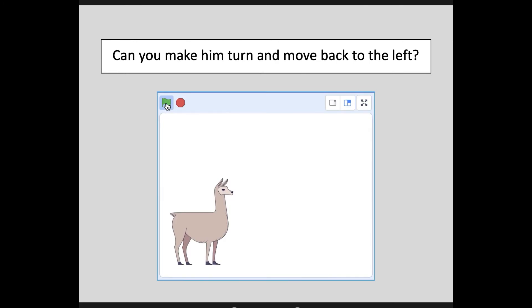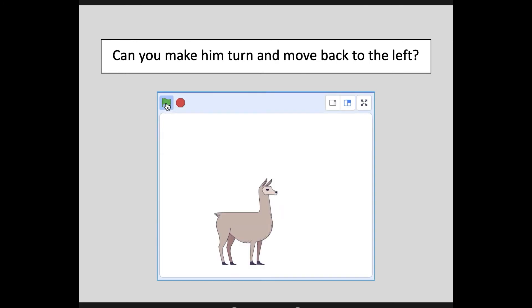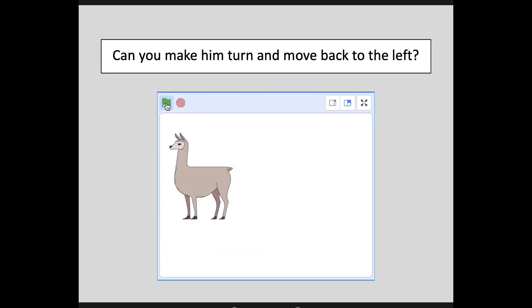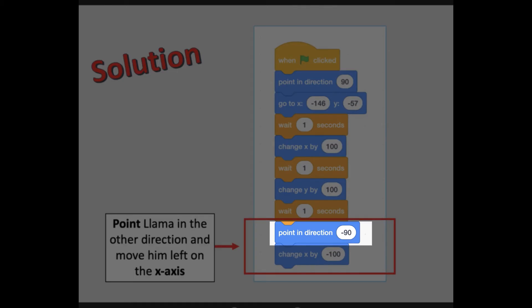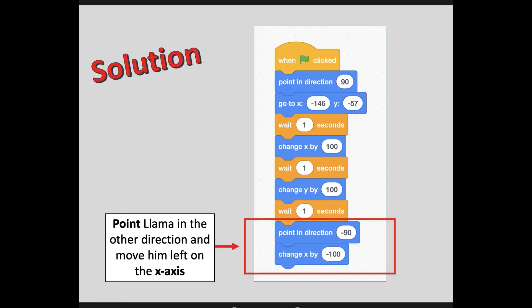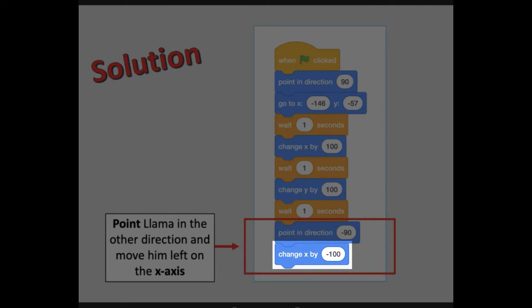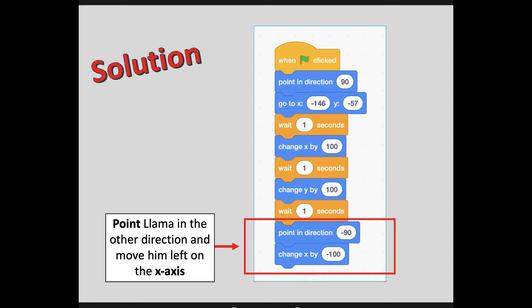Now, can you make him turn and move back to the left? Pause the video, think about what we've already gone over, and see if you can program that Llama to turn to face the other direction and move to the left side. To get Llama to switch directions, we have to point him in the other direction, which is negative 90, and then we can move him left on the X axis. To get exactly where we were before, we can just put in negative 100. You could have also used the move code we already played with or a glide code, but this is how you would do it just by changing the coordinate.